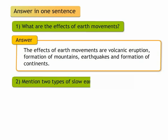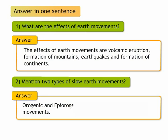2. Mention two types of slow earth movements. Answer. Aurogenic and epi-aurogenic are two types of slow earth movements.